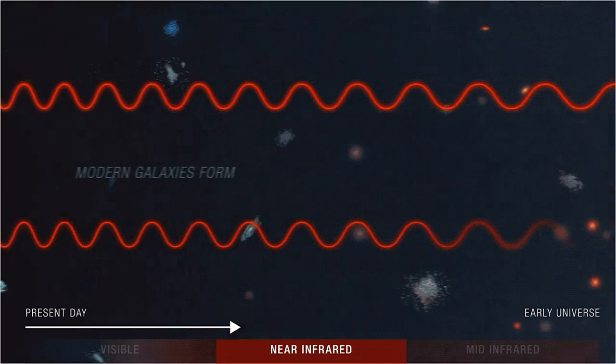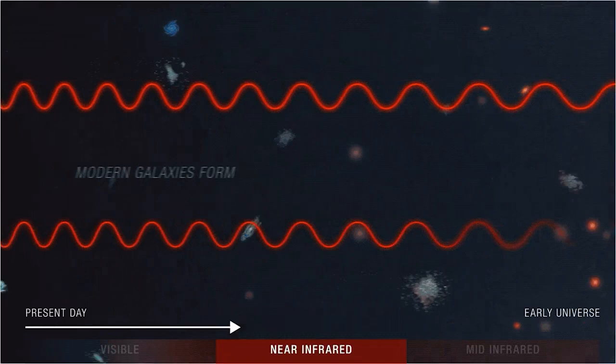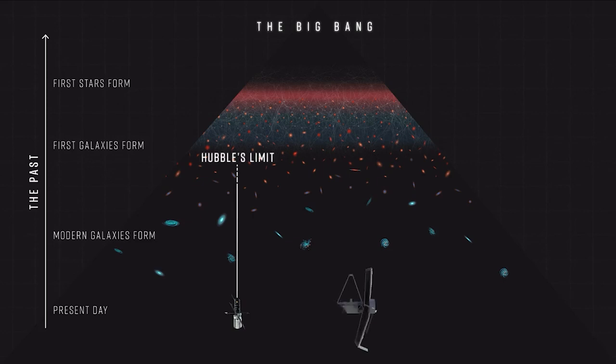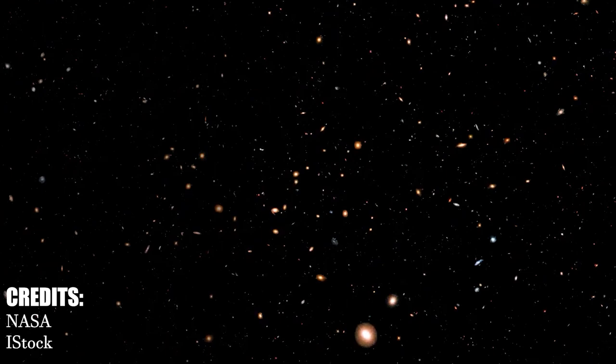These images will be captured in infrared and then colorized for public use. The visible and ultraviolet light emitted by the universe's first luminous objects has been stretched by the expansion of the universe, arriving today in the form of infrared, which Webb is equipped to detect with unprecedented clarity, giving it an unprecedented view of the first stars and galaxies that formed 13.5 billion years ago.